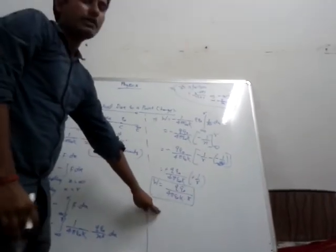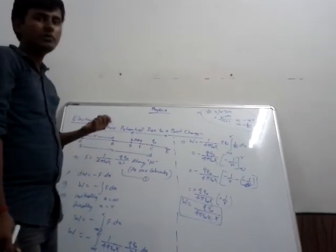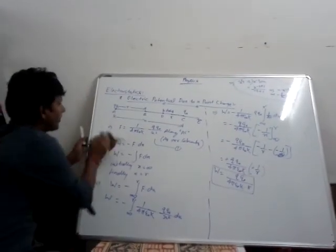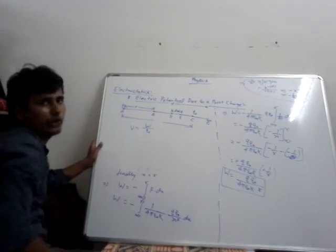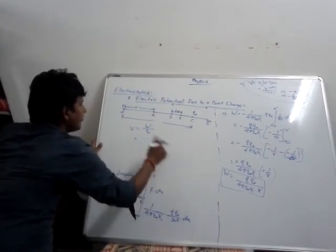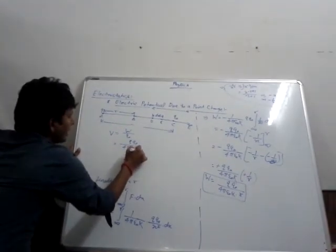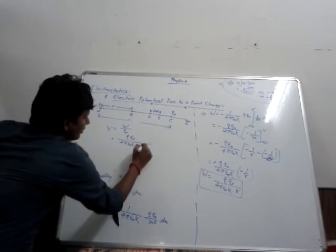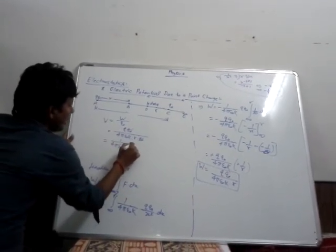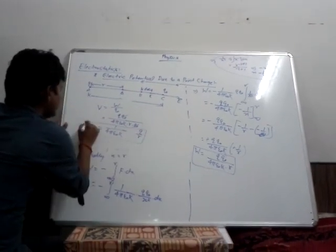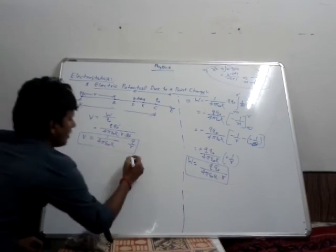This is equal to the work done for bringing the charge from C to B. But the main objective of our derivation is to find out the potential. The potential is equal to the work done divided by the test charge Q0. From the above equation the value of W is QQ0 divided by 4 pi epsilon naught K into R, and we divide it by Q0. Q0 and Q0 cancel, so the value of potential V equals 1 divided by 4 pi epsilon naught K into Q by R. This will be the final equation for the electric potential due to a point charge. Hence proved.